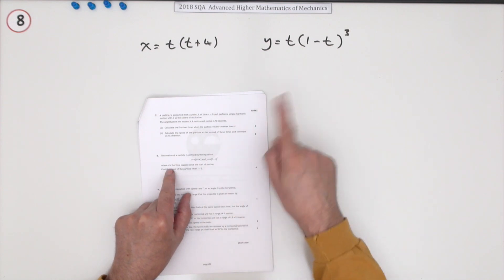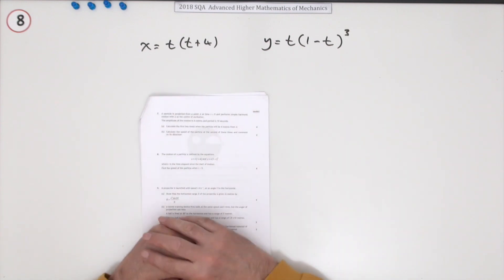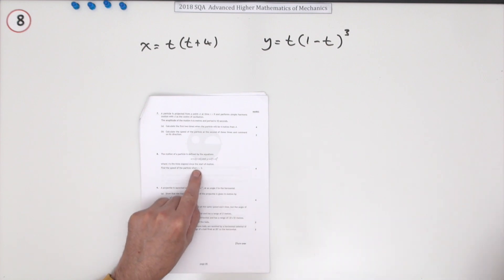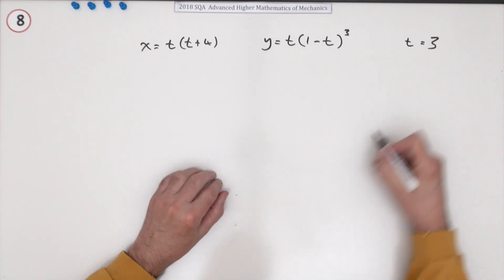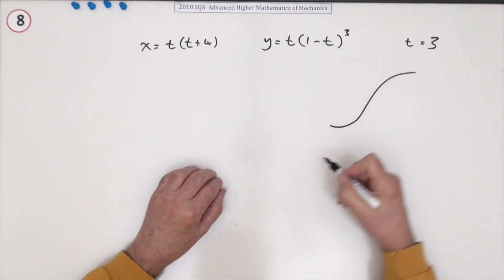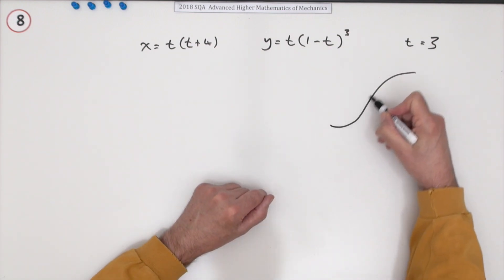Where t is the time elapsed since the start of the motion, find the speed of the particle when t equals three. Well, parametric equations: a parameter is a single value that will describe the position of some point on a curve.